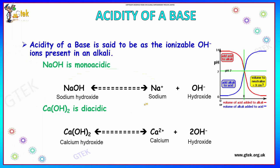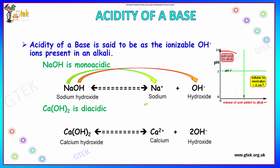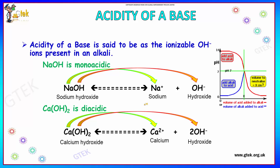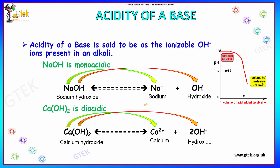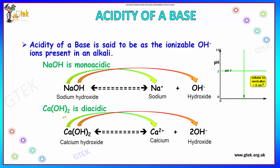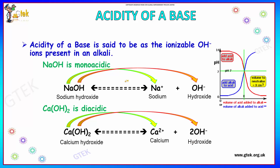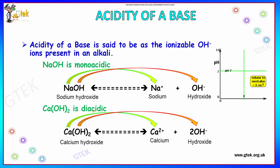If we talk about the acidity of a base, it refers to the number of ionizable hydroxide ions present in an alkali. Sodium hydroxide is monoacidic because it emits one hydroxide ion. Calcium hydroxide is diacidic because it emits two hydroxide ions. So monoacidic means one hydroxide ion, and diacidic means two hydroxide ions.